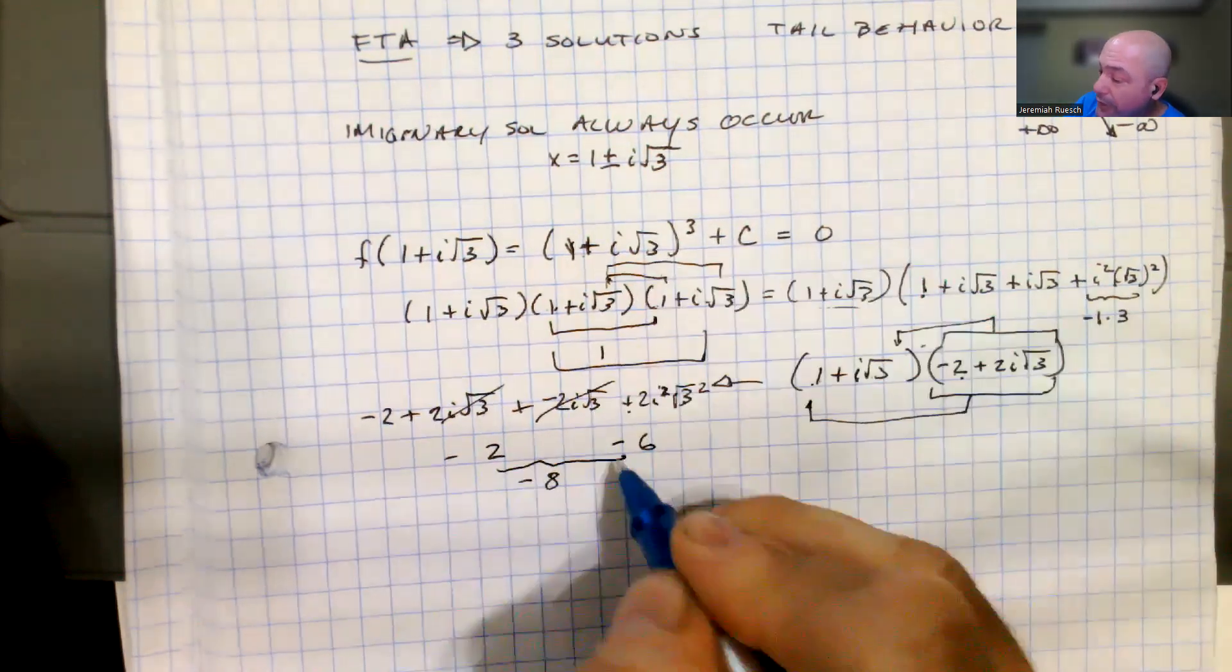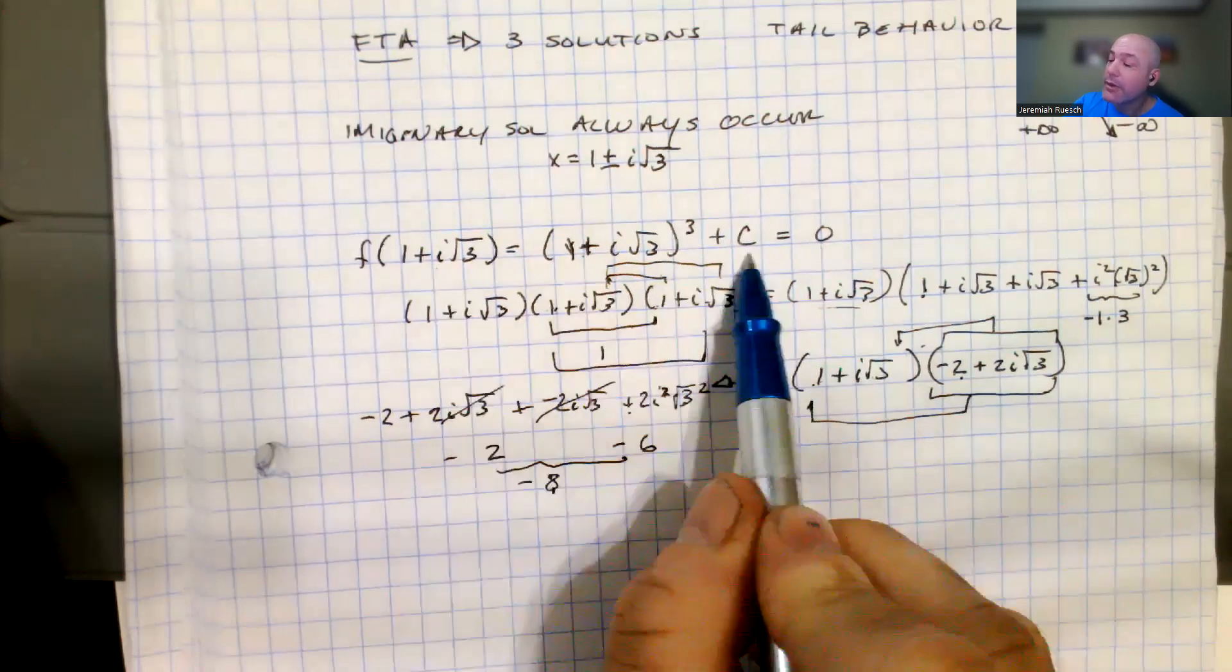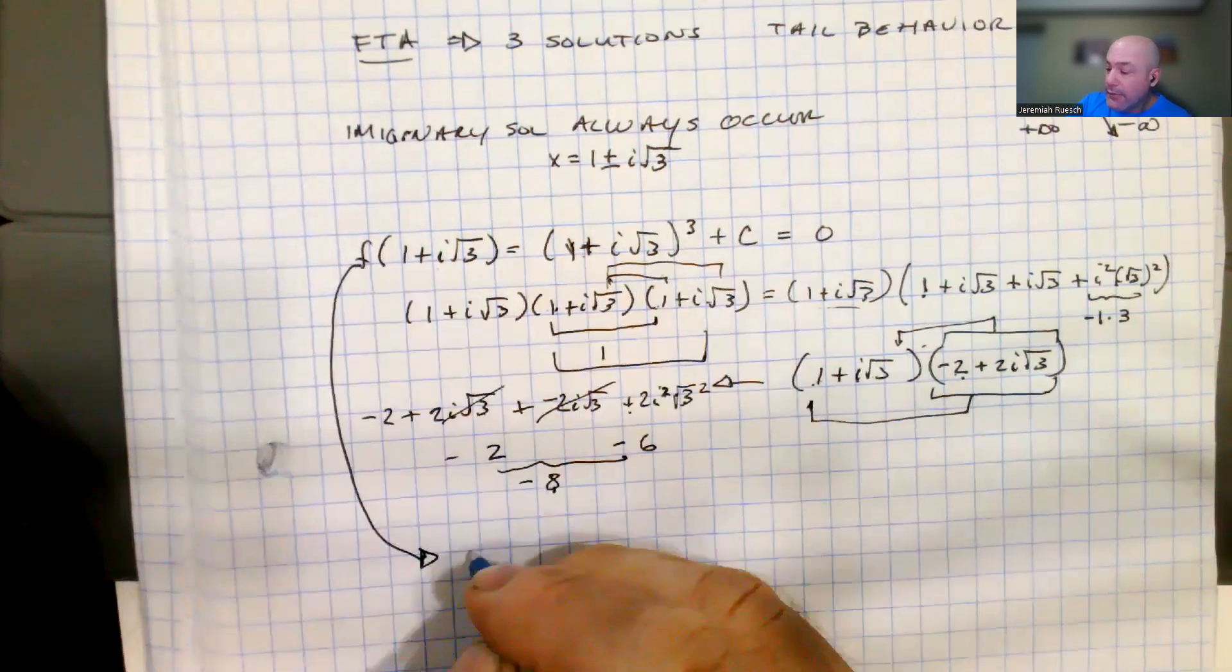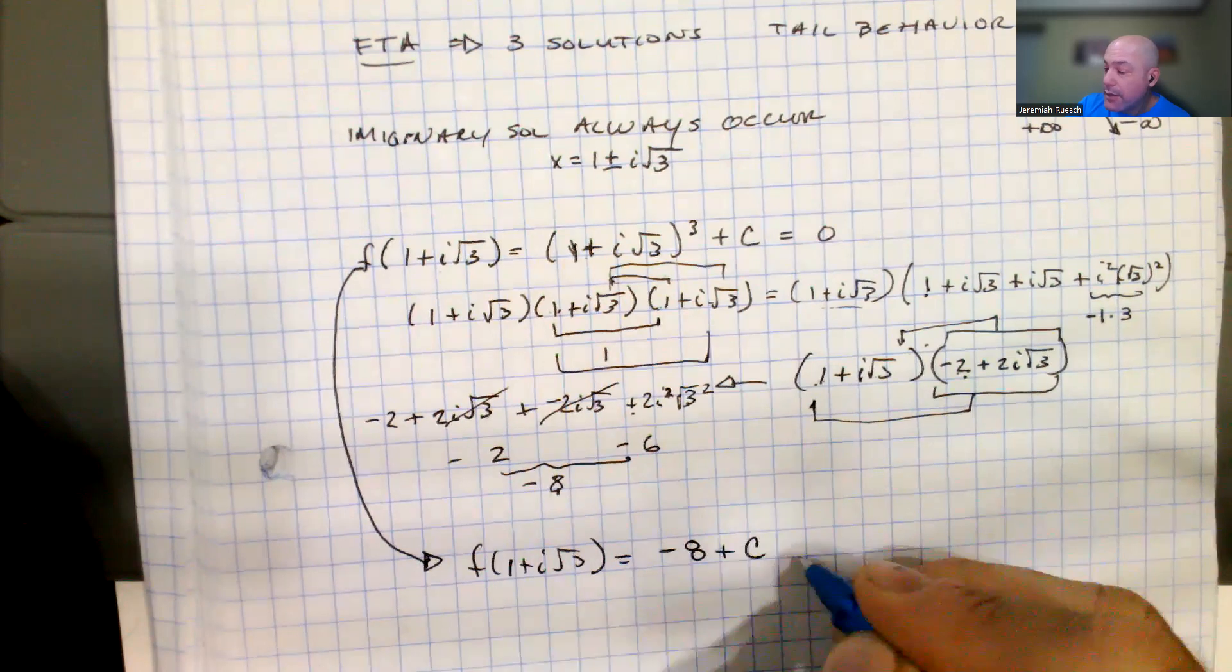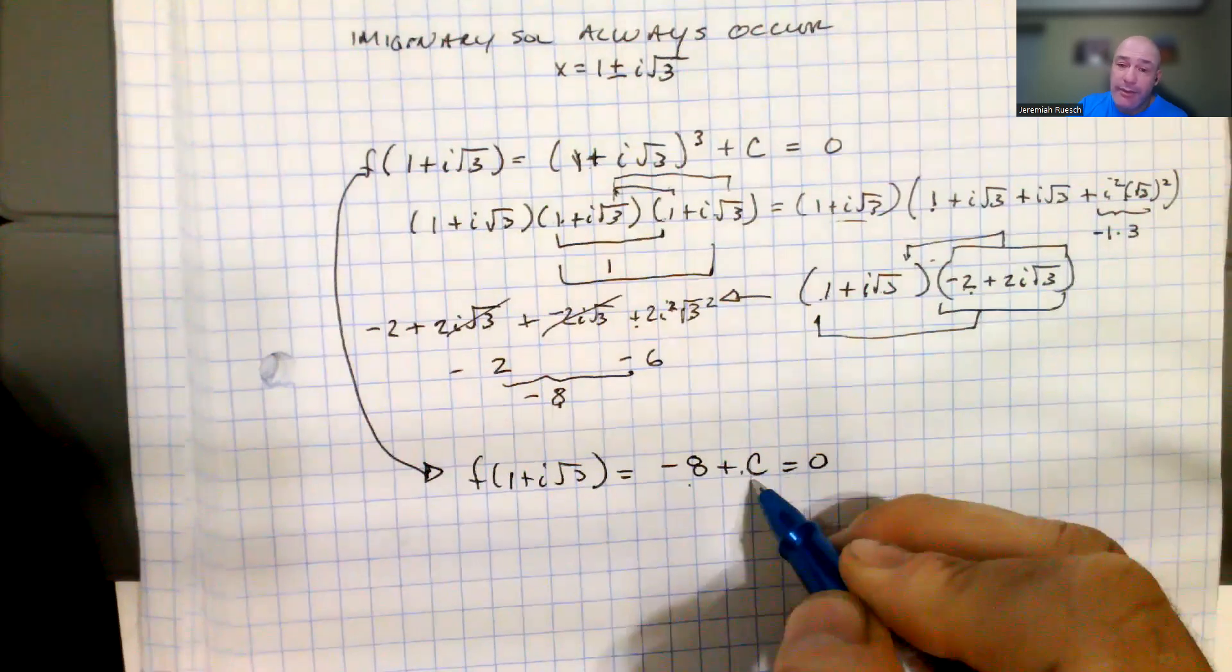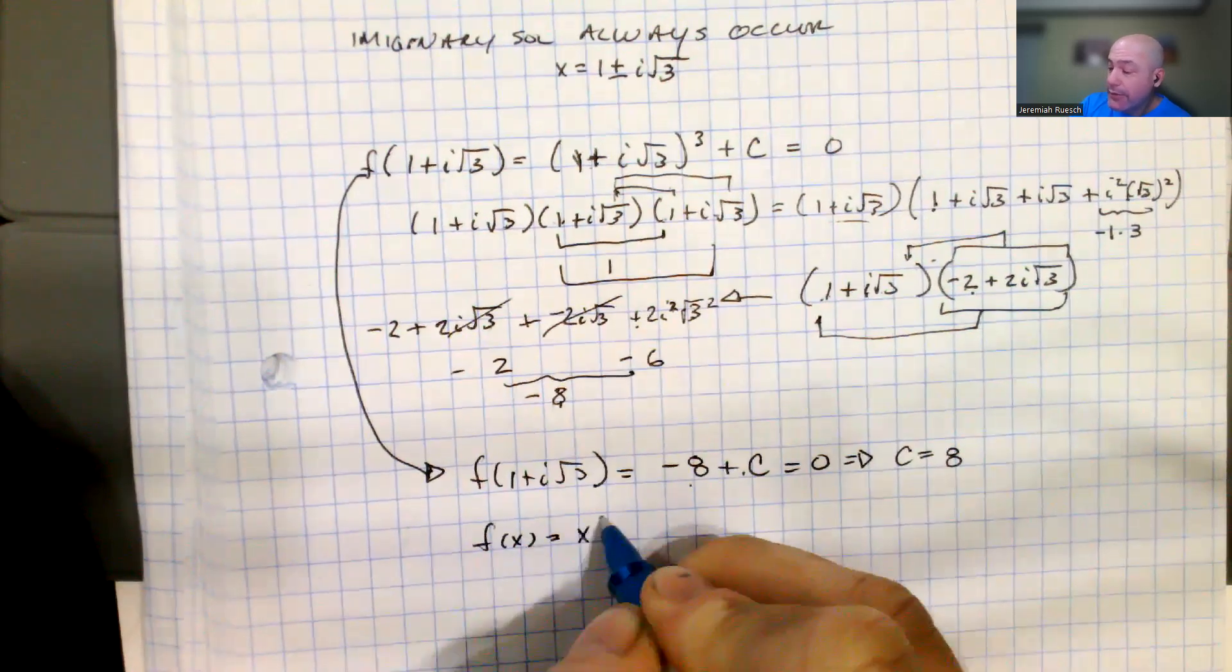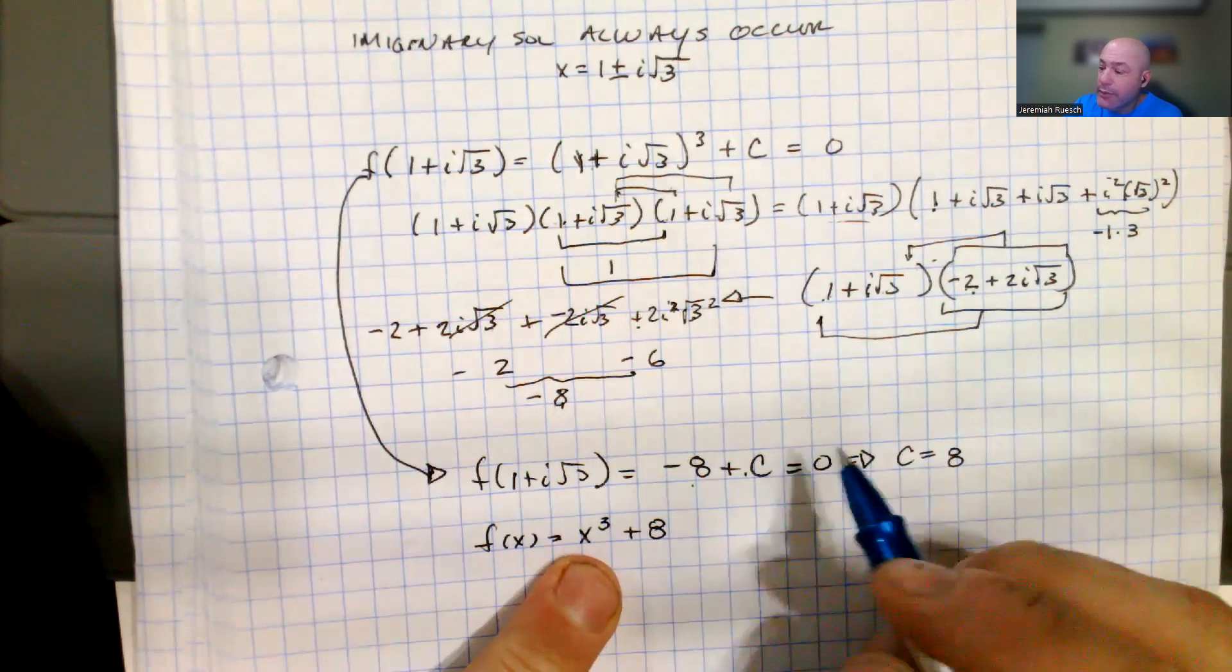So our final result then is negative 2 minus 6, which is minus 8. So that's just the result of all this simplifying into a minus 8. Going back to our result, plugging this in, 1 plus i square root of 3 cubed turns out to equal negative 8. So I have f of 1 plus i square root of 3 is equal to negative 8 plus c, which equals zero. So what do we add to negative 8 to make it equal zero? Well, that means that c has to equal 8. We can write that f(x) is really equal to x cubed plus 8.